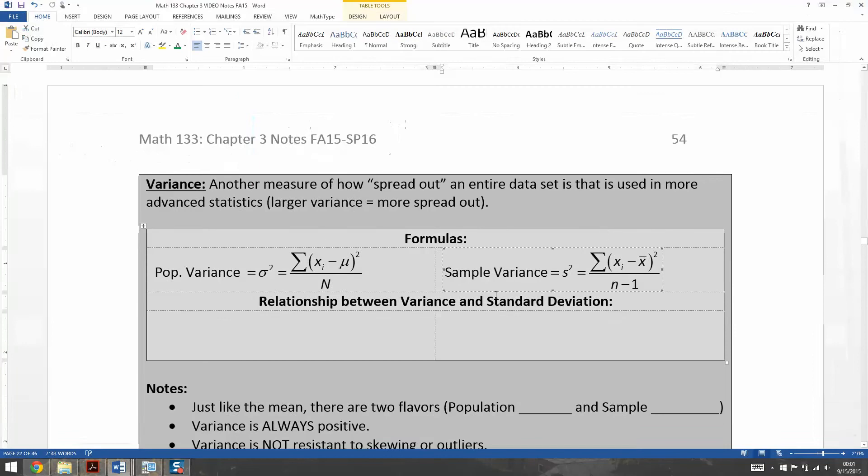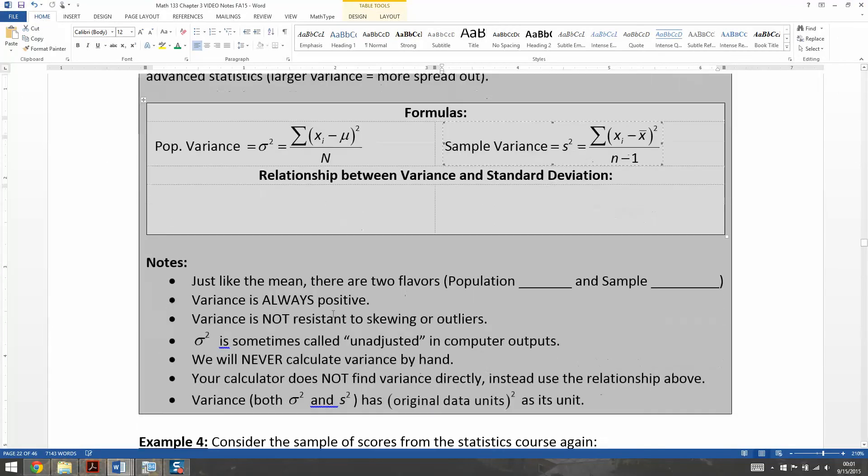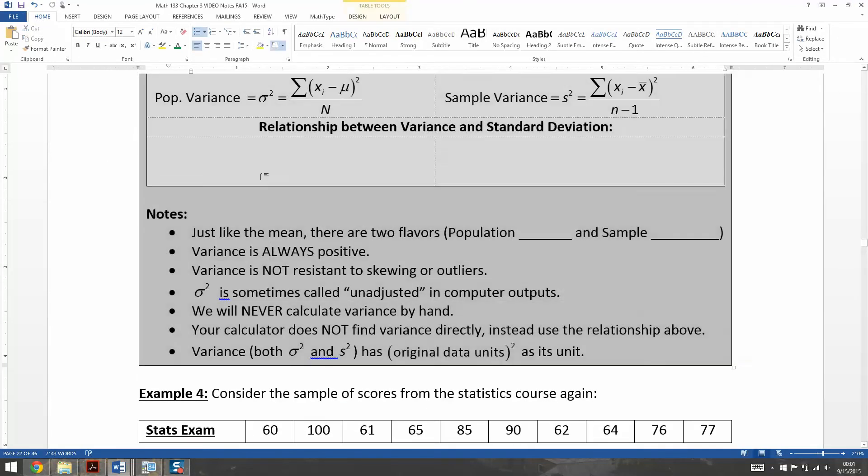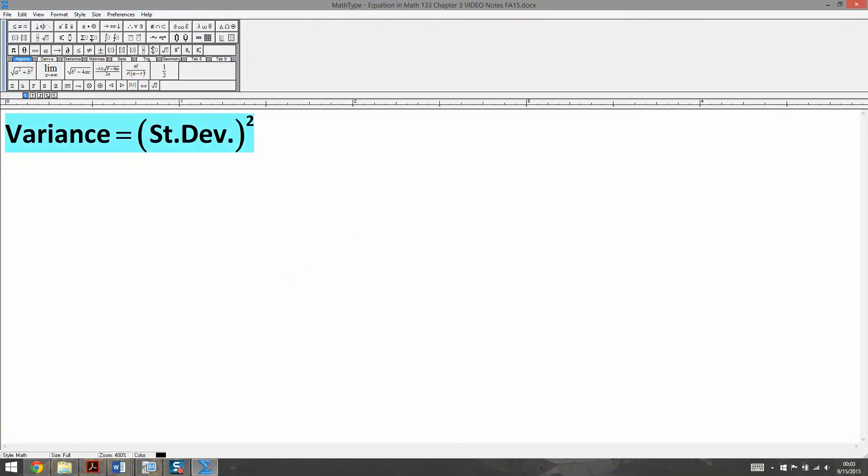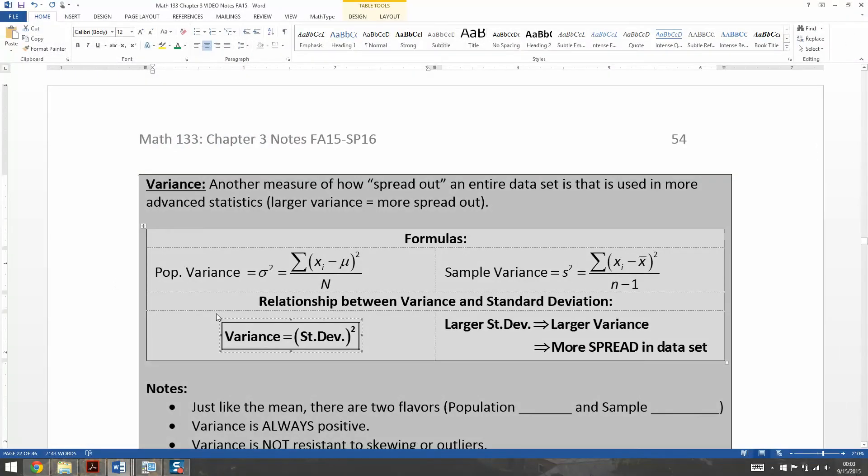And that's all we really need to know about it at this point. Well, that and everything I list down here. So the nuts and bolts of it is that the variance is the standard deviation squared. That's the relationship right there. That means that the larger your standard deviation is, the larger your variance is, and then the more spread your data set will have.